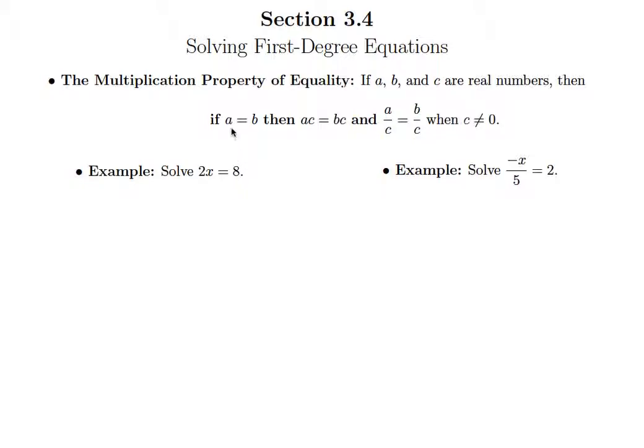This gives us the tool of understanding that if I know the left side equals the right side, then multiplying by the same thing on both sides of that equation does not change the equation. So if a equals b, then a times c equals b times c are equivalent equations.